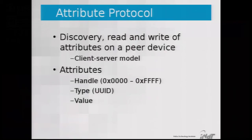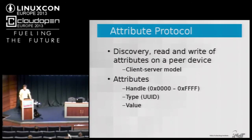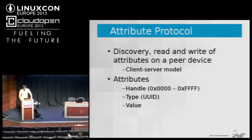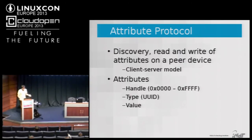The Attribute Protocol allows discovery, read, and write of attributes on a peer device. It works on a client-server model: the server has attributes that the client can read, write, and be notified about when values change. Attributes are basically a pair of a handle — like an address — and then a type and value. It was designed for small data transfers, so the radio doesn't need to be on for a long time.